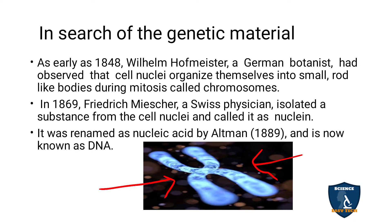In 1869, Friedrich Meister, a Swiss physician, isolated a substance from cell nuclei called nuclein. This is a key point: the nuclein discovered by Friedrich Meister was later renamed nucleic acid by Altman in 1889, and is now known as DNA.